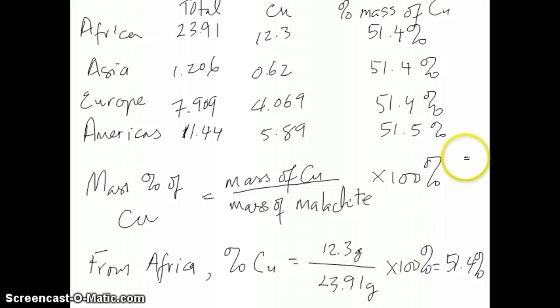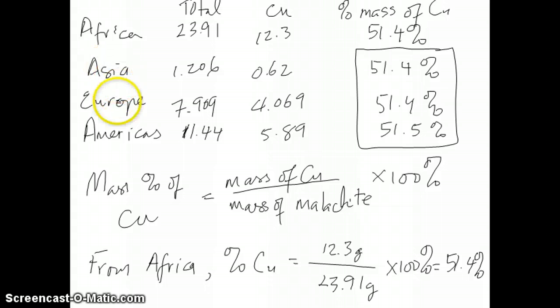So I just calculated this percent composition by mass for all the other samples from all the other continents. And you notice that the numbers 51.4, 51.4, 51.5, they're all about the same. In fact, they're either the same or just only a little bit different, which is a small difference here. So that's what it means to have the Law of Definite Proportions. You basically have the same percent composition of the element regardless of where the source of the element is. So that's an important idea to understand at this point.